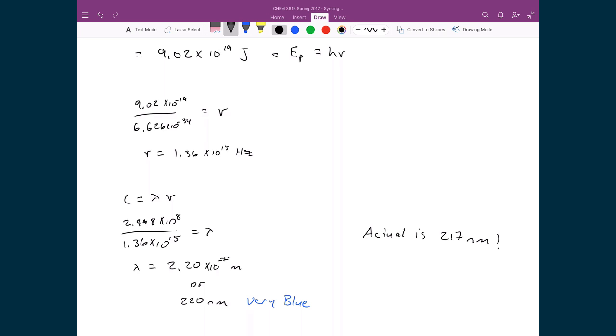So that means, based on this very simple model of the atom where we made quite a few simplifications, we ended up with a calculated number that is very close to the actual measured number.